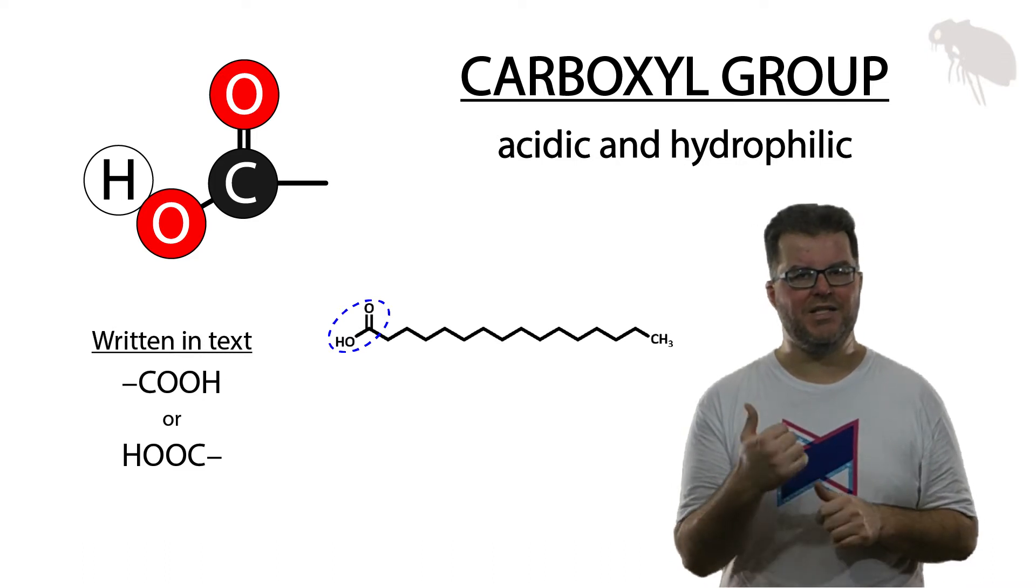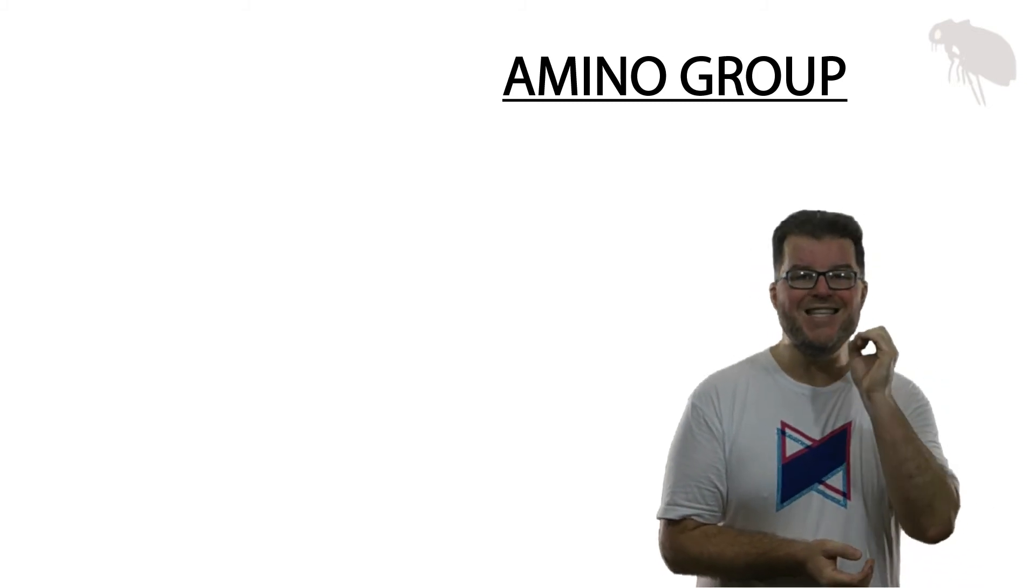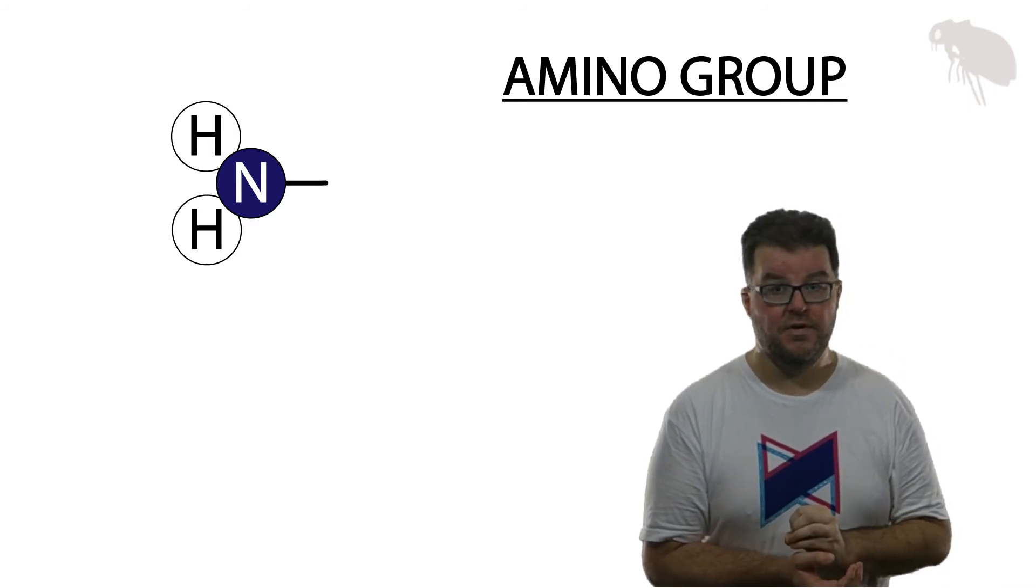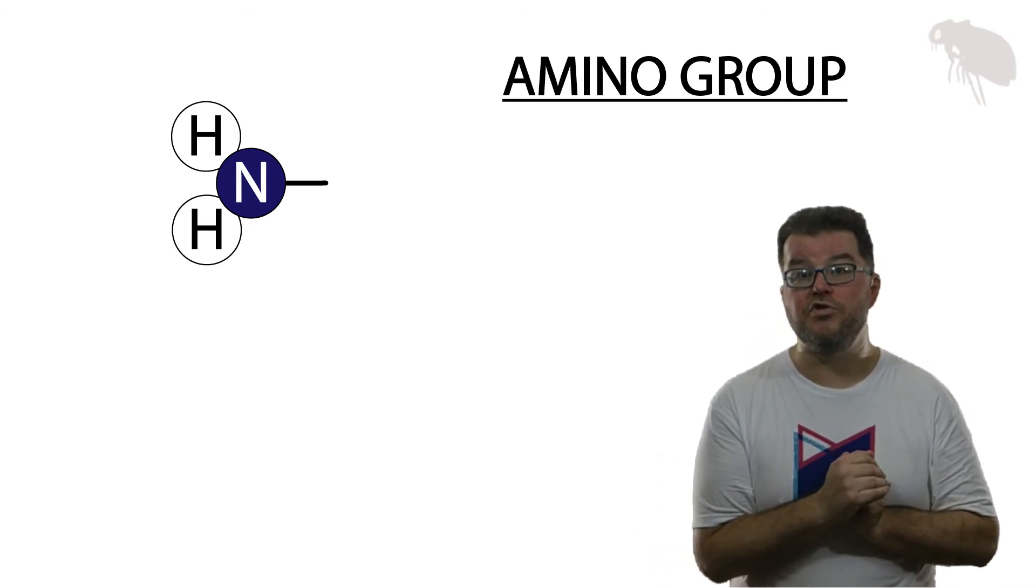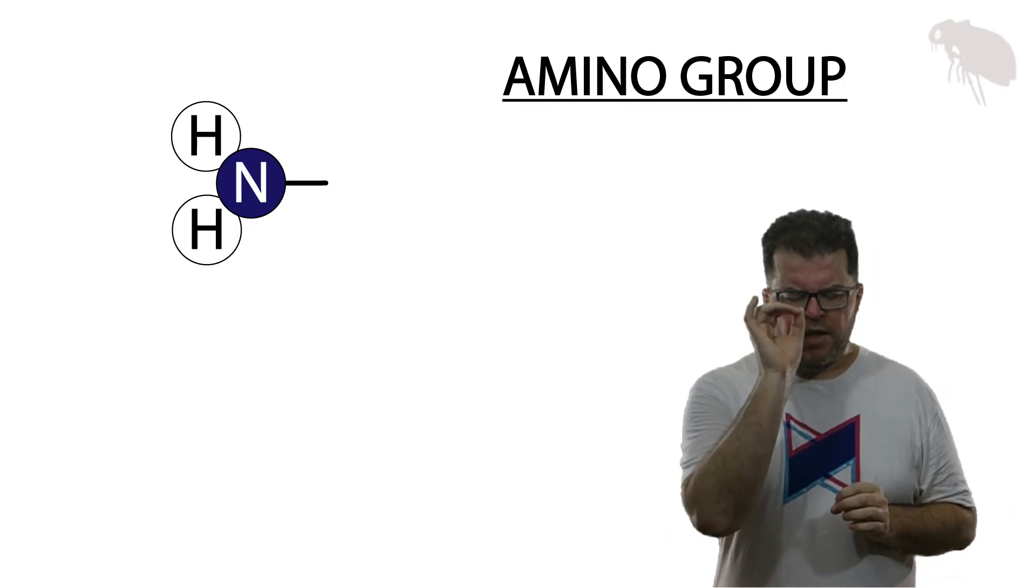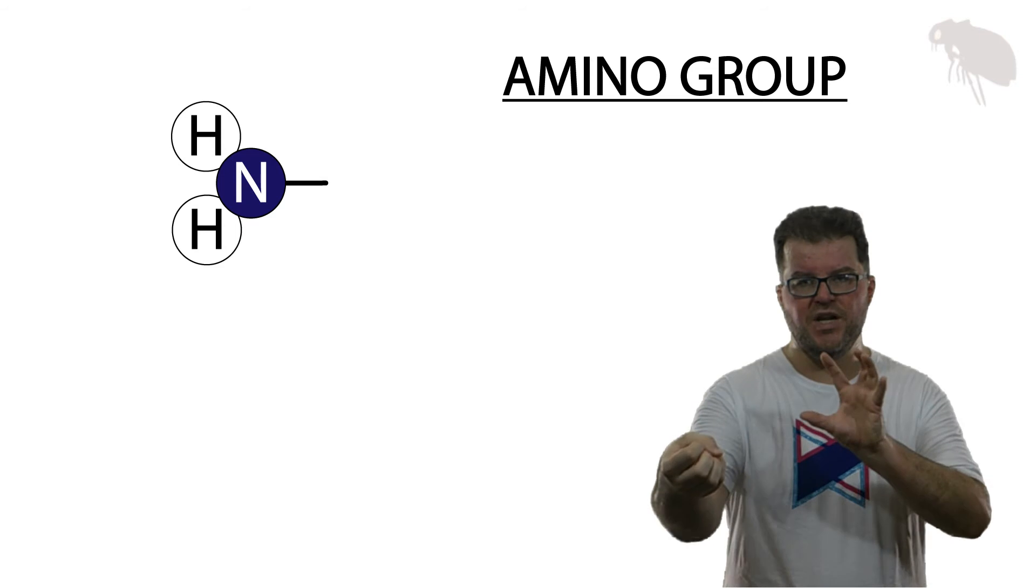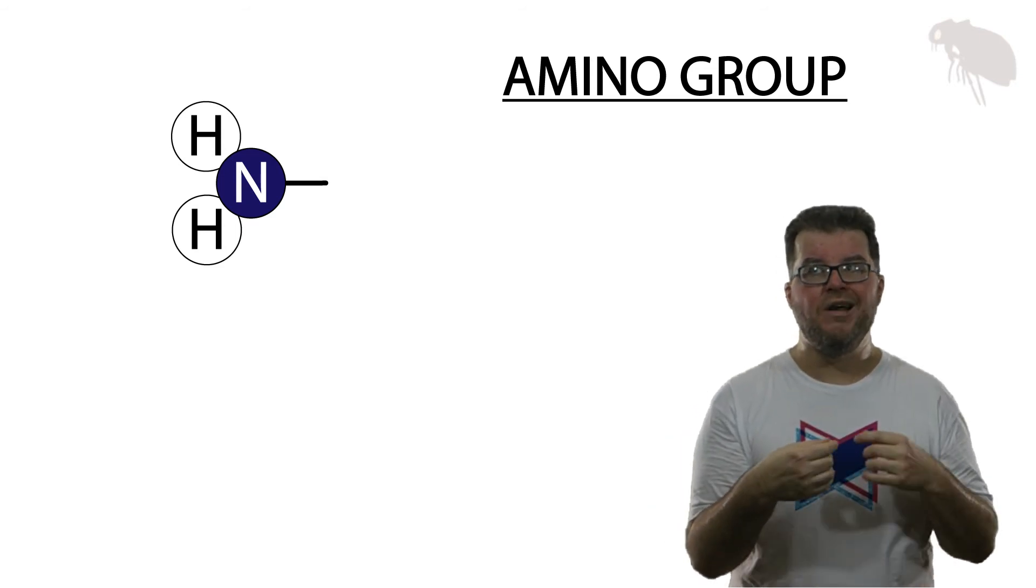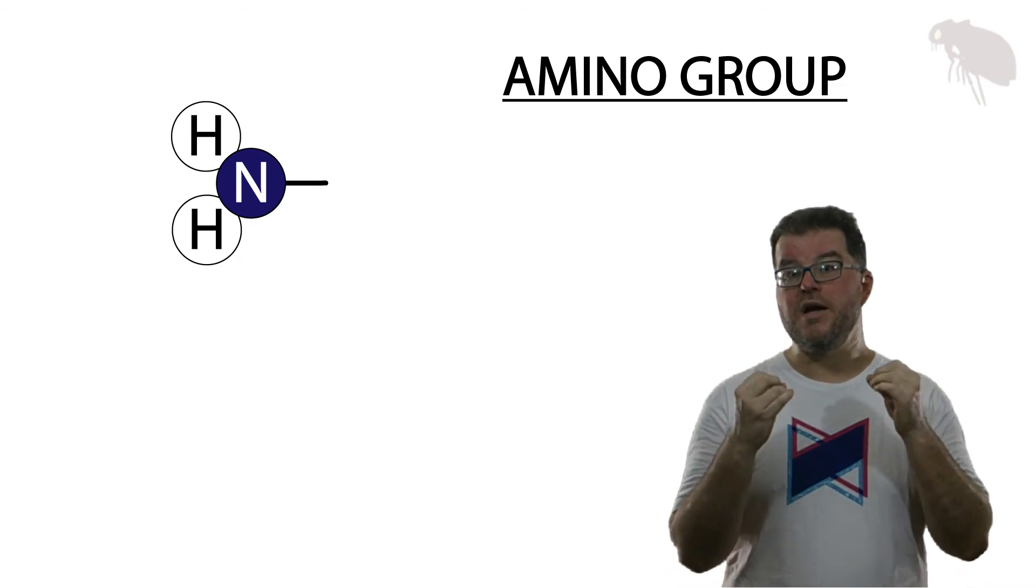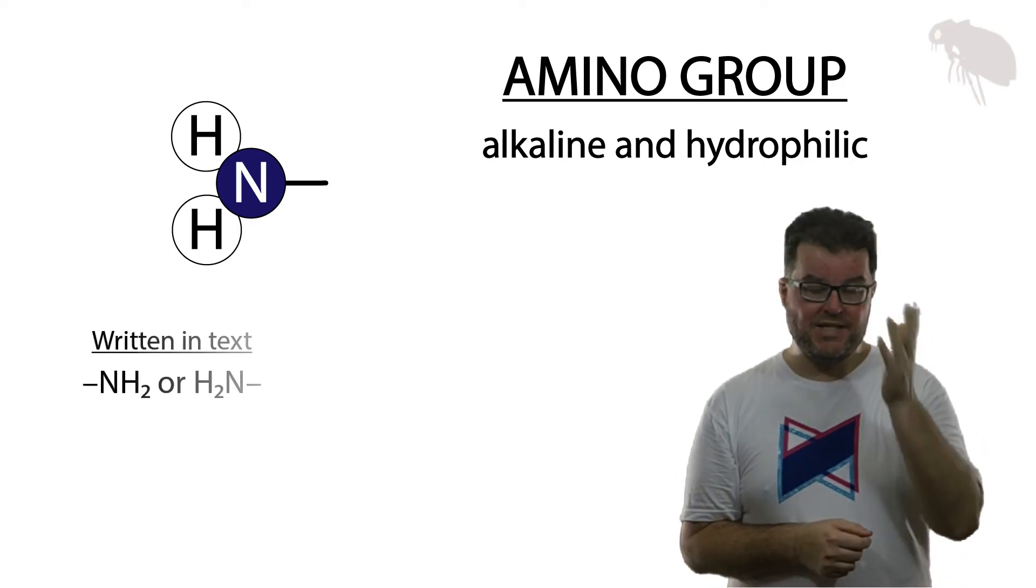If we have an acidic group, we must also have an alkaline one. So let's erase this and switch to the amino group. The amino group is a nitrogen bound to hydrogens. That NH2 group is definitely hydrophilic because nitrogen, like oxygen, tends to form polar bonds with other atoms. But it's actually able to bond to a third hydrogen. It can take a hydrogen ion, a free proton from solution, and incorporate it into its structure. And in doing so, it acts as a proton acceptor or a base. So amino groups are hydrophilic and alkaline.